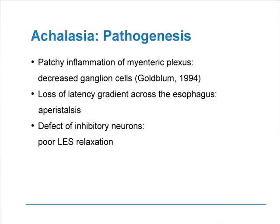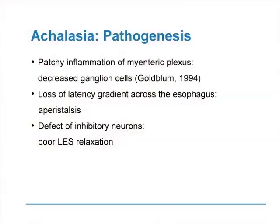The pathogenesis involves patchy inflammation of the myenteric plexus with decreased ganglion cells, causing a loss of the latency gradient across the esophagus. Normally the myenteric plexus coordinates sequential esophageal contraction from proximal to distal. When this progression is lost, the bolus stagnates and aperistalsis results. The defect of inhibitory neurons in the LES prevents it from relaxing — normally we inhibit tonic contraction of the LES when we swallow, and when that doesn't occur, the LES creates an obstacle to the passage of the bolus.